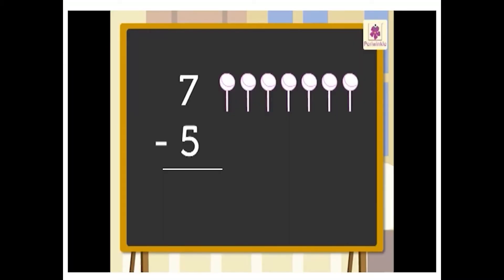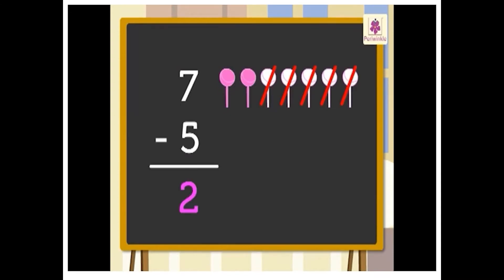Let us see another example. Here we have seven lollipops. If I take away five lollipops, then how many lollipops are left? Yes, two lollipops are left. So seven minus five is equal to two.